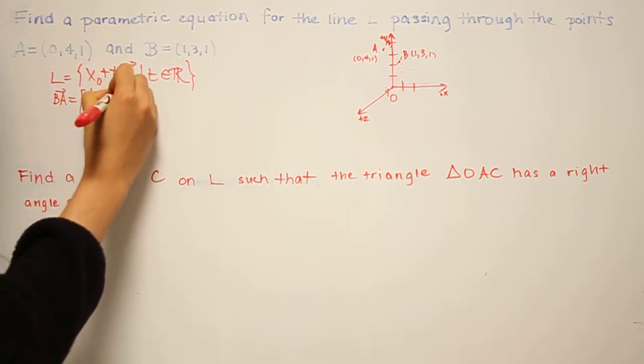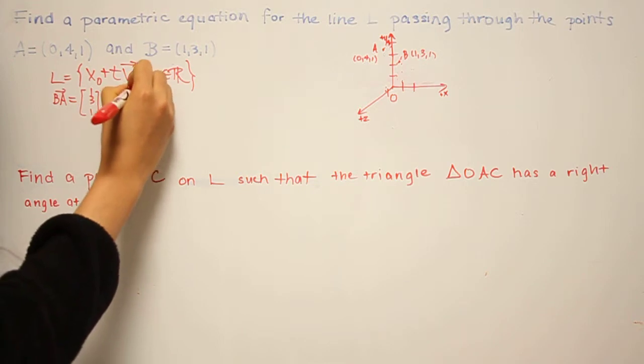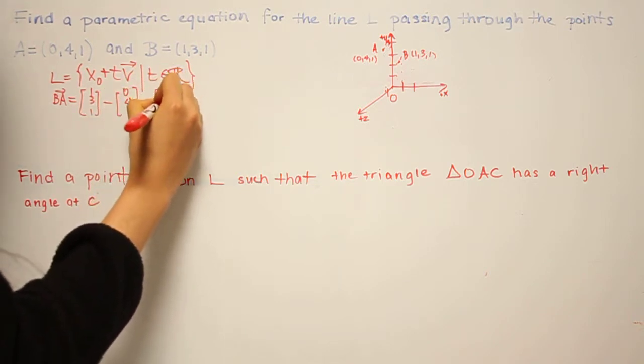So it's (1, 3, 1) minus (0, 4, 1), which gives us (1, -1, 0).